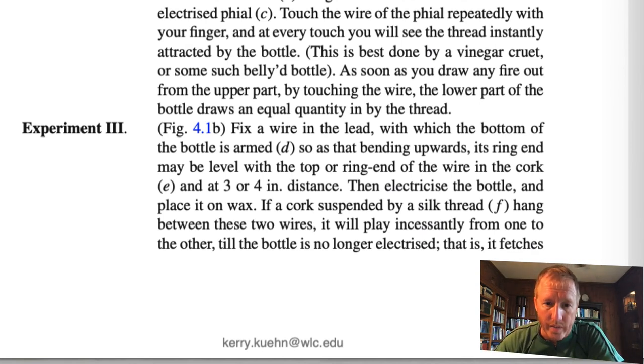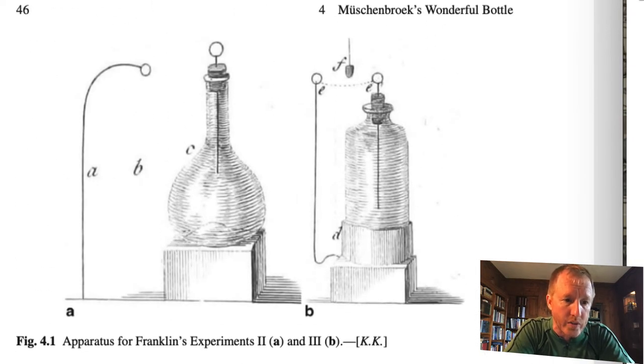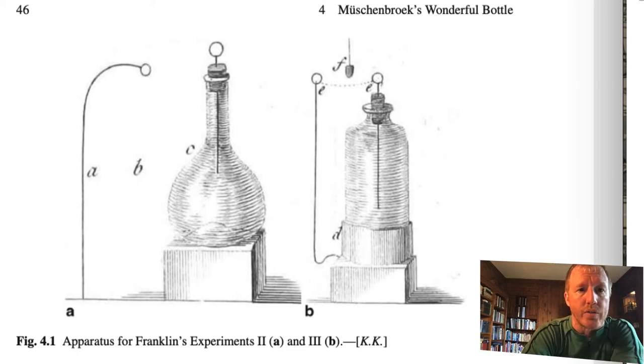Experiment 3 also, let me just mention now that we're going to experiment 3. I'm not going to go through all of these experiments in detail. I just want to walk you through them. I think it's worthwhile for you spending a little bit of time thinking about these. In experiment 3, that's depicted in figure 4.1, part B, on the right-hand side of the figure on the top of page 46. He said, fix a wire in the lead with which the bottom of the bottle is armed, part D, so as that bending upward, its ring end may be level with the top or ring end of the wire in the cork, E. So here he's not using his standard Muchenbrook bottle. He's using a Muchenbrook bottle where there's a lead foil wrapped around the bottom, and that lead foil at point D is attached to a wire that goes up to a ring on the left-hand side at point E. So any negative charge on the jar is collected by this lead foil, and the point E on the left-hand side becomes negatively charged. So now you have a situation where you have negative charge on the left ring at point E and positive charge on the right ring at point E, or that ball that's inserted into the center of this vial.